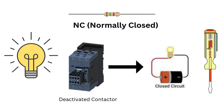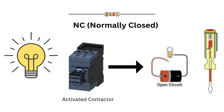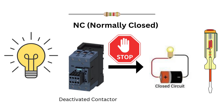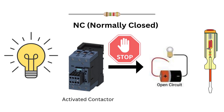Next up, we have NC, or normally closed contacts. Here the contacts are closed when the contactor is not powered, meaning the circuit is complete and electricity can flow. But when you power the contactor, it opens the contacts — click — and the electricity stops flowing. NC contacts are perfect for safety features. For example, in an emergency stop system, you might want the circuit to be live until you press the stop button. When you press the button, the contactor powers up and opens the NC contacts, cutting the power and stopping the system instantly.